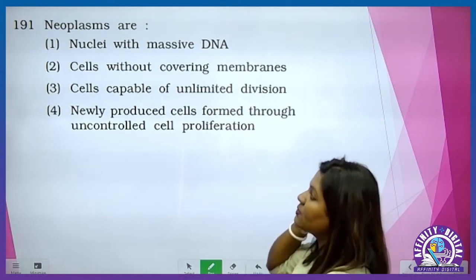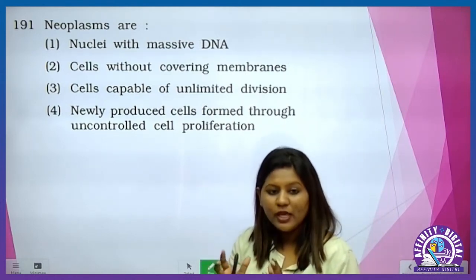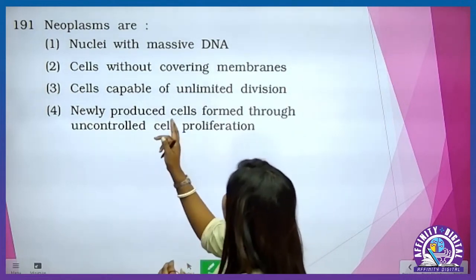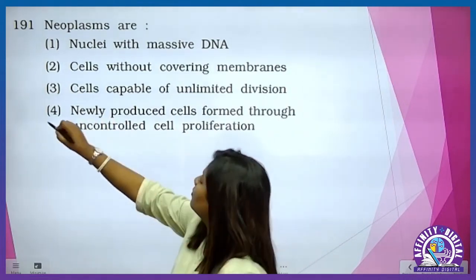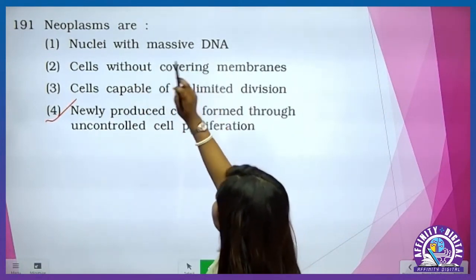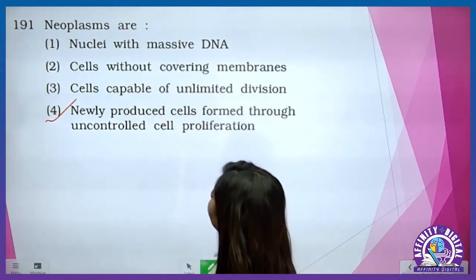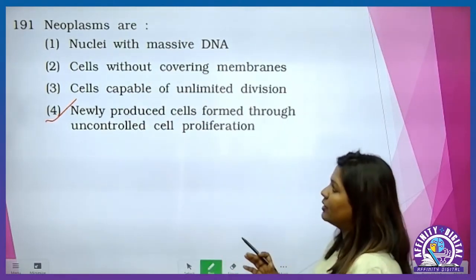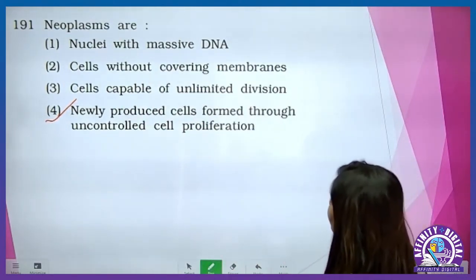Neoplasms — that is the growth, that is the mass of abnormal cancerous cells. So it is the newly produced cells formed through uncontrolled cell proliferation. It is not nuclei with massive DNA, or cells without covering membrane, or cells capable of unlimited division — it is the mass of the cell, newly produced cells.